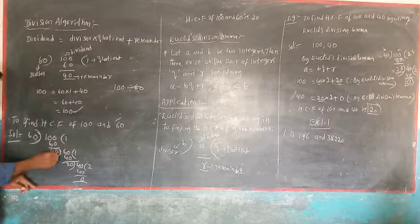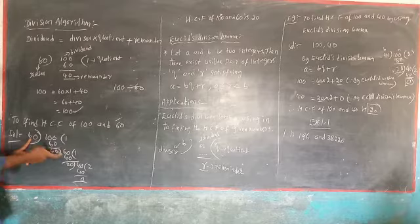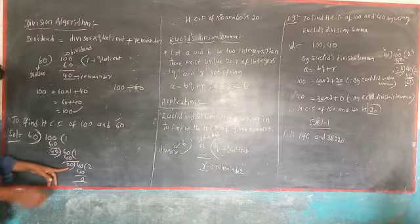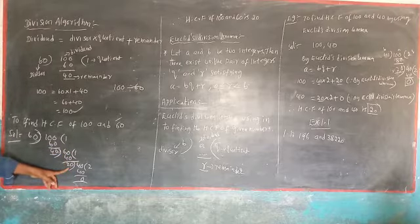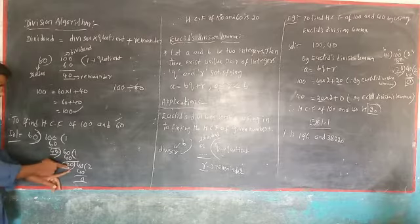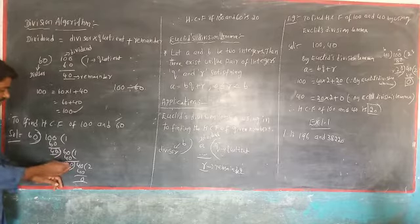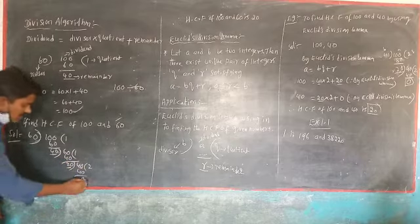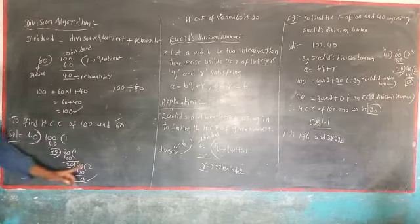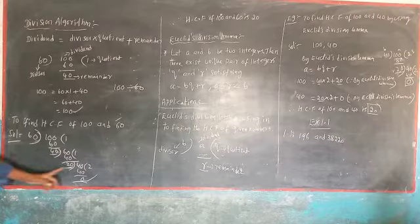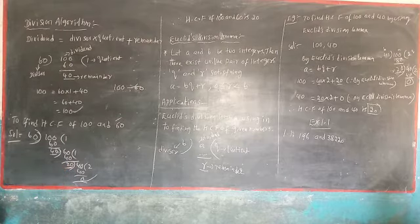Now, the remainder 40 becomes the new divisor. So 60 divided by 40: this goes once, remainder is 20. This process continues until you get a remainder of 0. Next, take the new divisor as 20; 40 divided by 20 gives remainder 0. When you get remainder 0, that divisor is the HCF of the given numbers. Therefore, 20 is the HCF of 100 and 60.